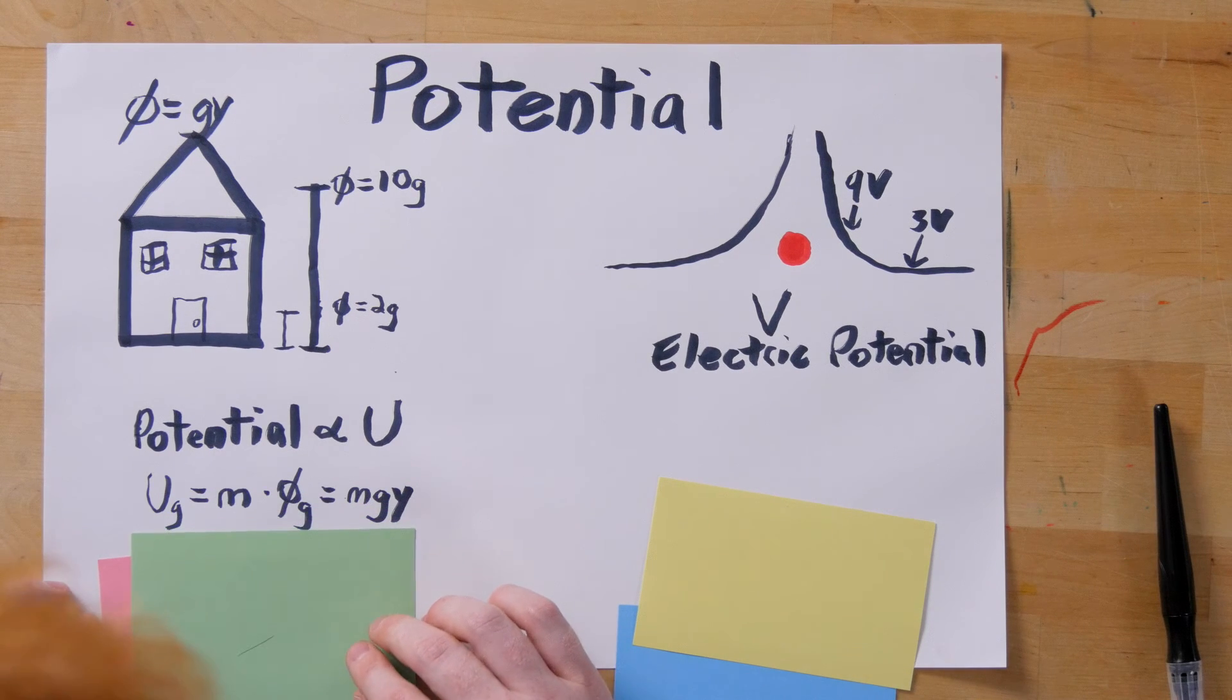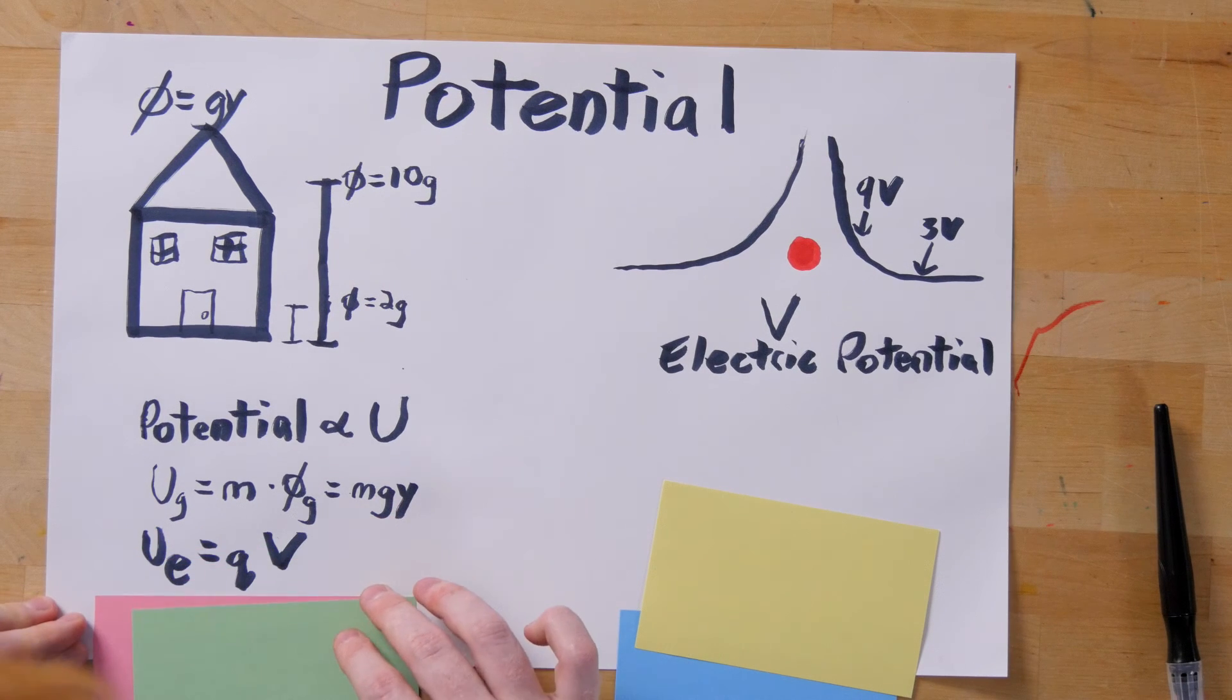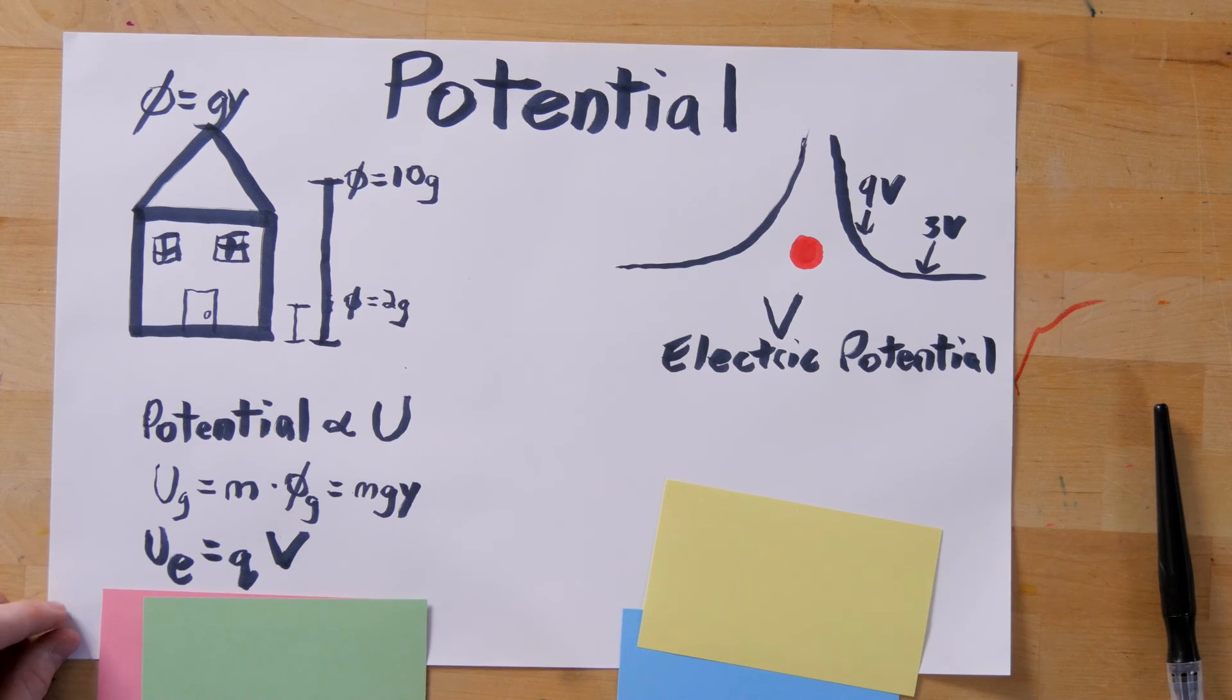For gravity, you multiply potential by mass to get gravitational potential energy. For electricity, you multiply electric potential and charge to get electric potential energy.